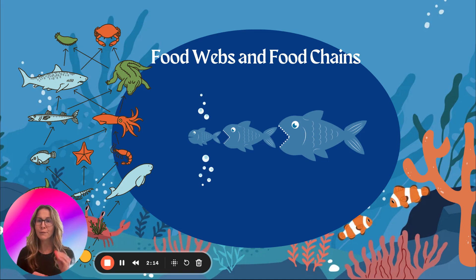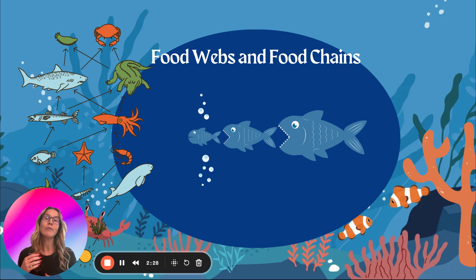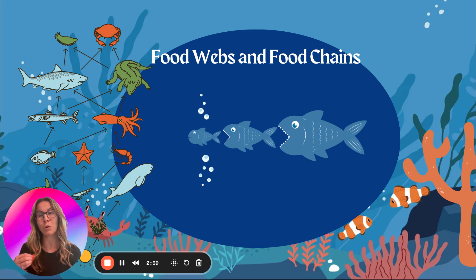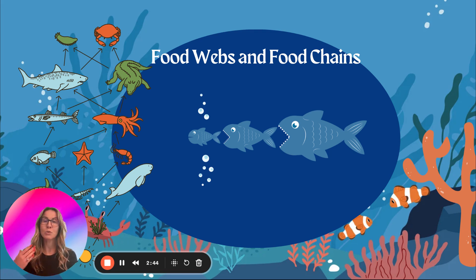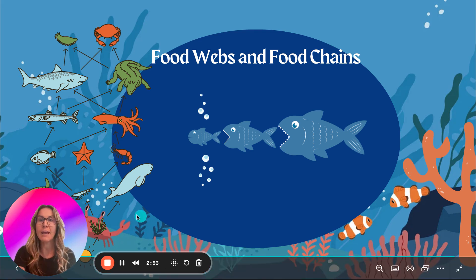Food chains are very direct — one organism to the next. You cannot see if there are other organisms consuming each other; we only see one organism consuming another, which is consumed by another. Comparing a food chain to a food web, the food web shows a lot more detail. Organisms aren't just prey to one organism — they could be prey to many. A food chain shows one single direct path; a food web shows all of the details.